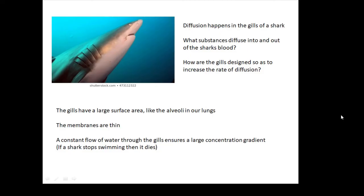A constant flow of water through the gills ensures a large concentration gradient. As the shark swims through the water, water comes in its mouth and out of its gills, so there's always a fresh supply of oxygen — always a big difference in concentration either side of the membrane, and a big difference in carbon dioxide concentration as well, because it's always being taken away as the water moves across the gills. Apparently, if a shark stops swimming, it will die because the concentration gradient won't be big enough for enough oxygen to get into the shark's blood.